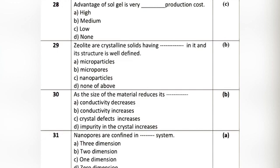Question 6: As the size of a material reduces, its — Option A: conductivity decreases. Option B: conductivity increases. Option C: crystal defects increase. Option D: impurity in crystal increases. The correct answer is Option B: conductivity increases.